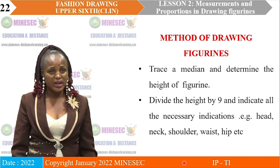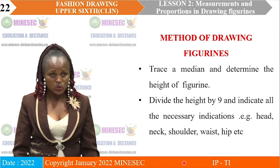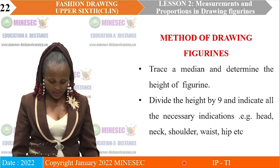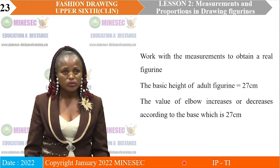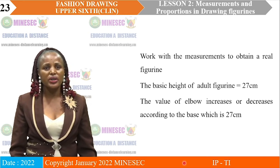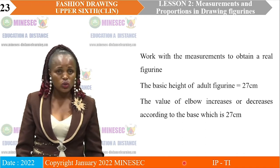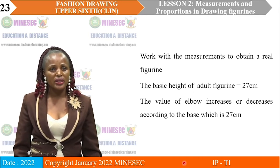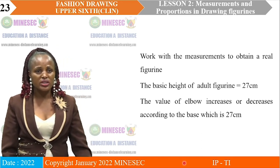You divide your measurements and indicate where the neck, shoulder, waist, hip, and legs are supposed to be. When you are doing this, you work with measurements to obtain a real figurine. You cannot just sketch a figurine without using measurements. If you actually want your work to come out properly, you have to use measurements. The basic height of an adult figurine is 27 centimeters. The value of the elbow increases or decreases according to the base, which is 27.